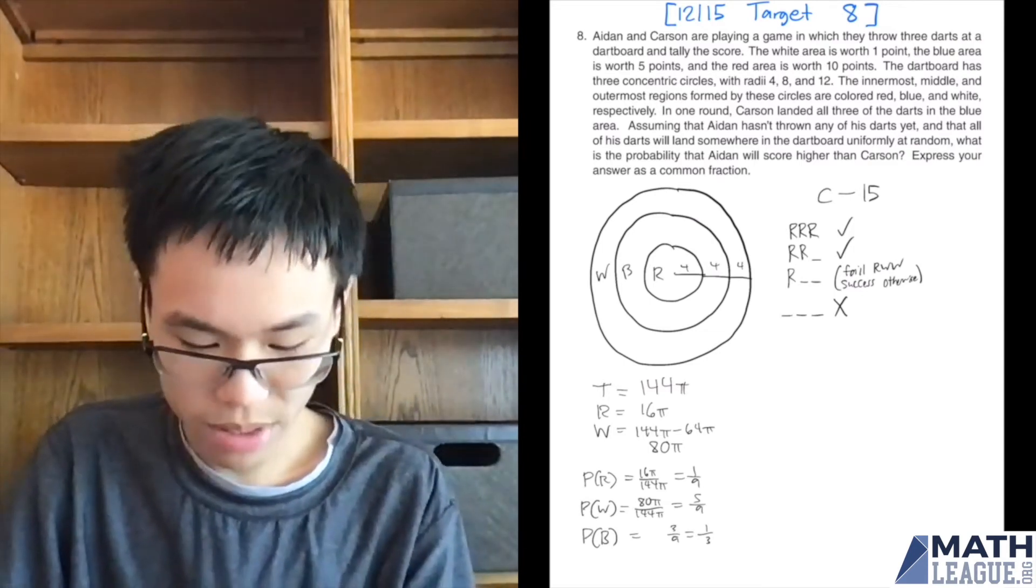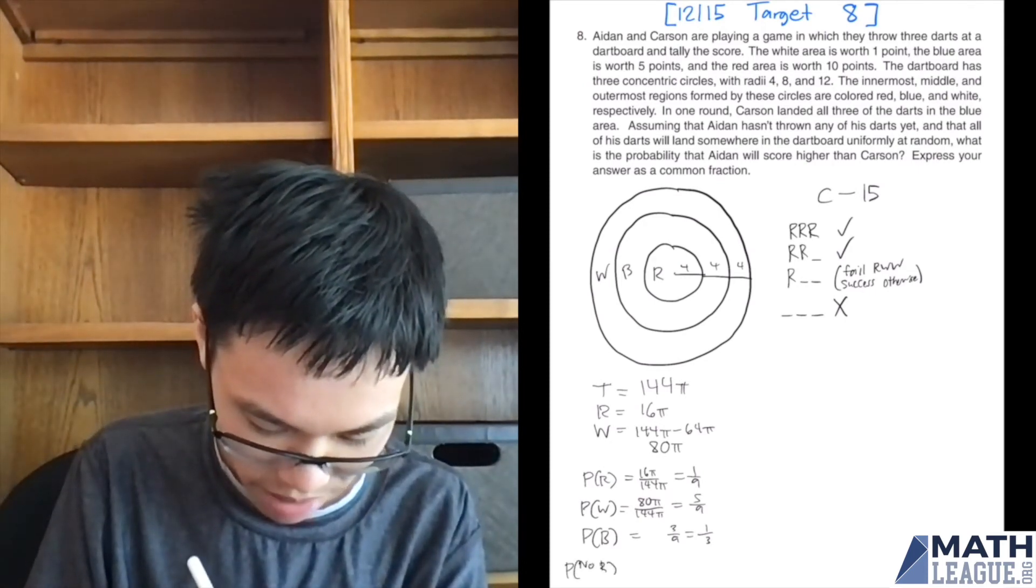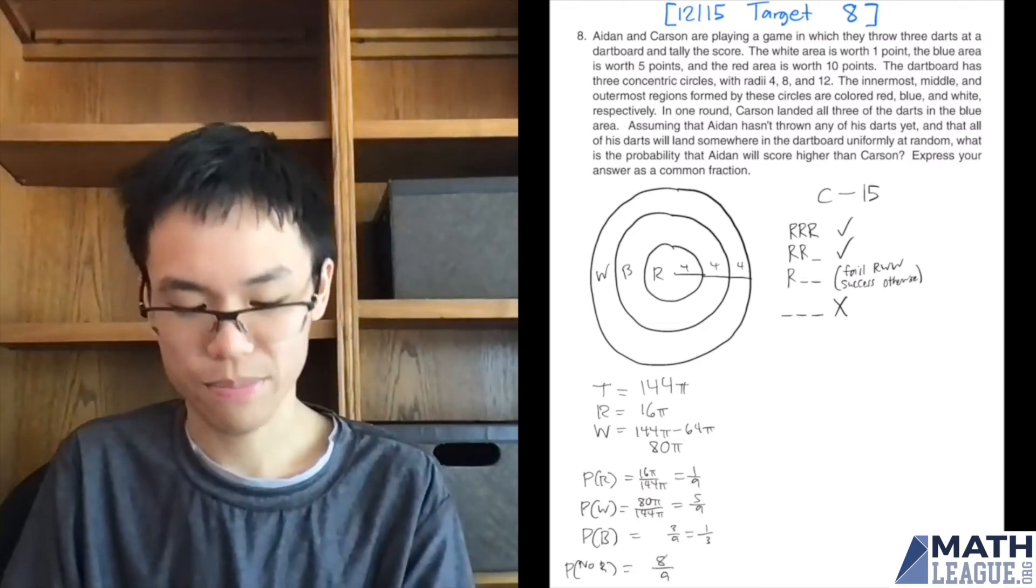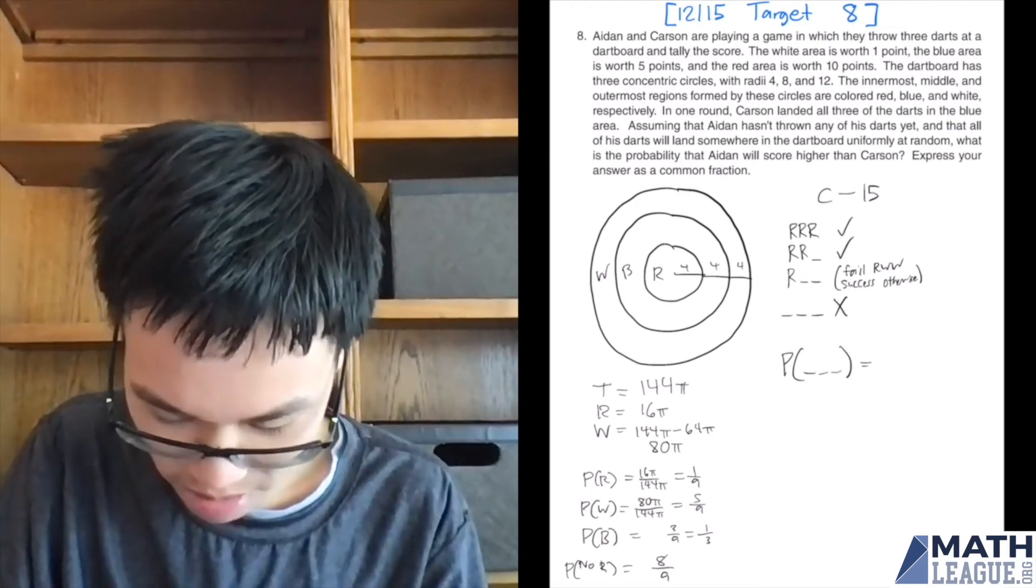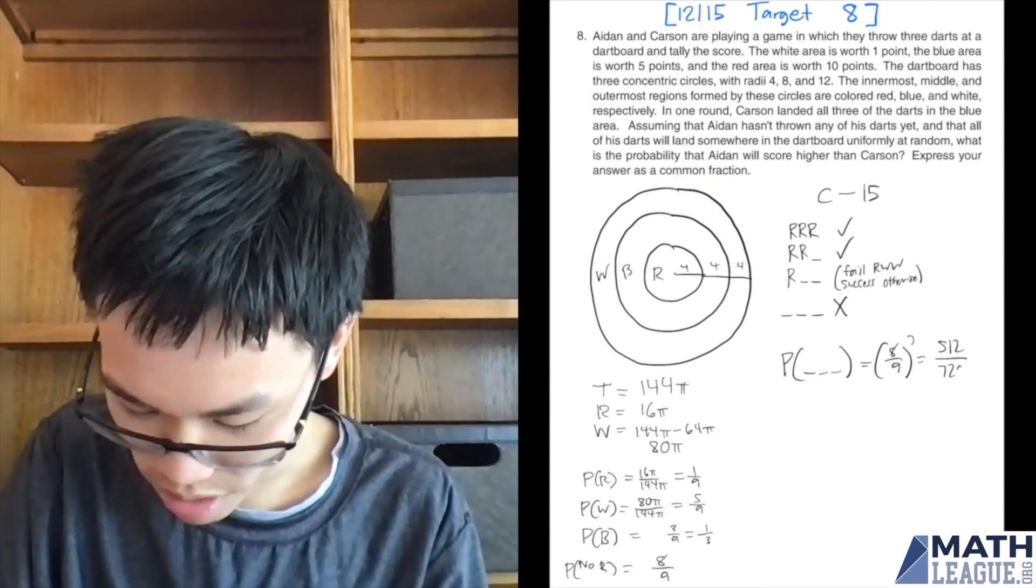All right. So probability of no red in one dart, that's going to be eight ninths, since the probability of red is one ninth. So probability of no reds, that's going to be eight ninths cubed, and that's going to be 512 over 729.